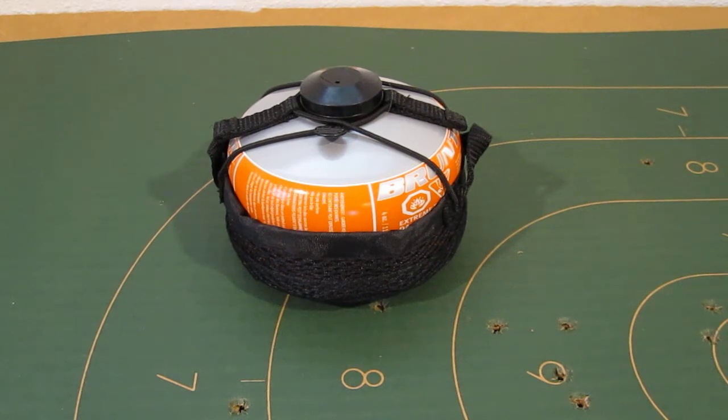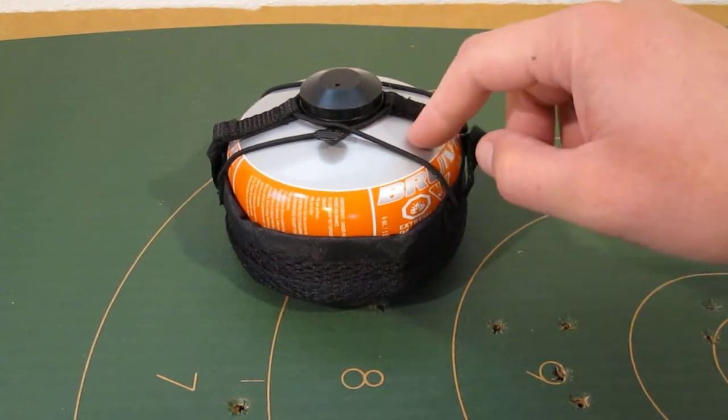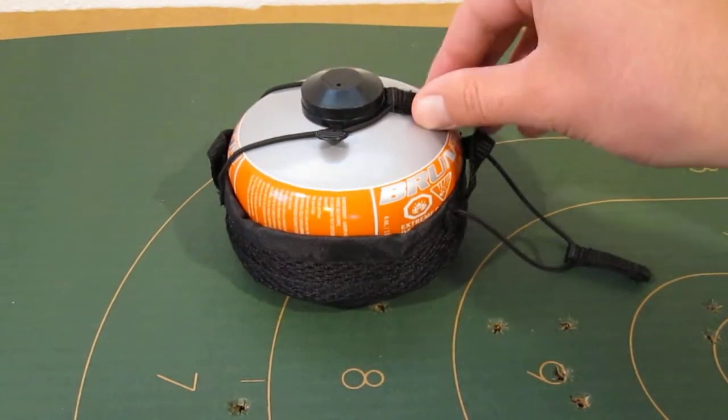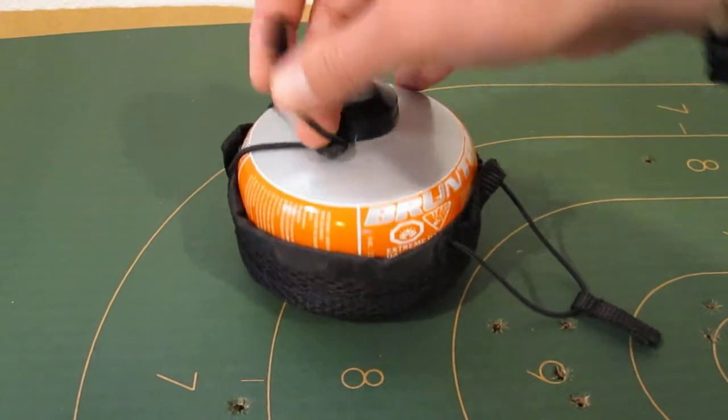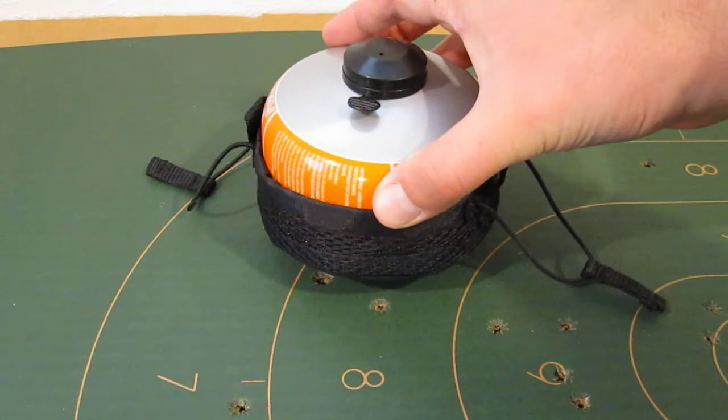This is the Brunton Flex Collapsible Stove. When you get your Flex, it does not come with an ISO bottle, but I have it in there to demonstrate how this system goes together. So I have a can of Brunton fuel, and you have this nice little mesh storage panel here.